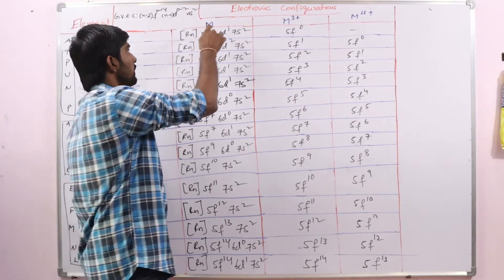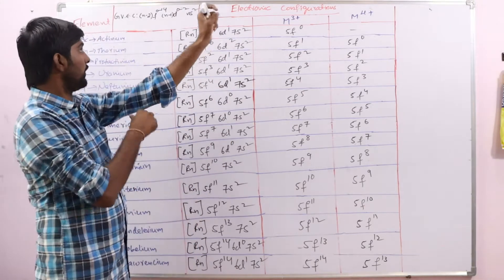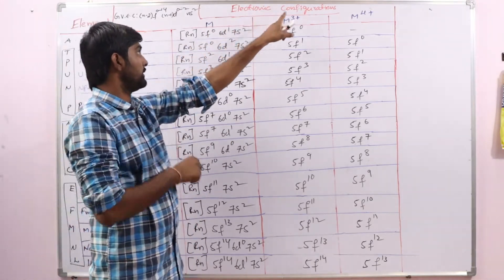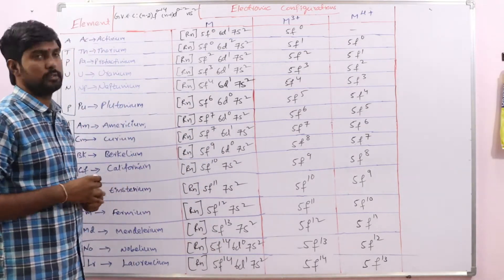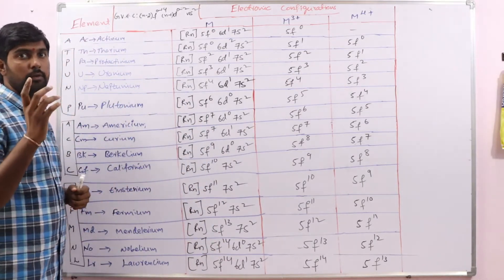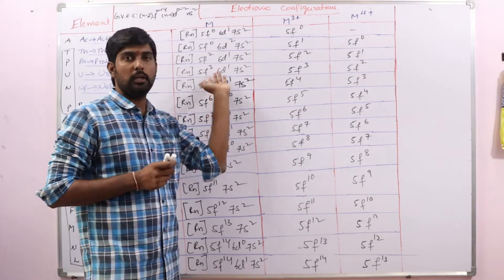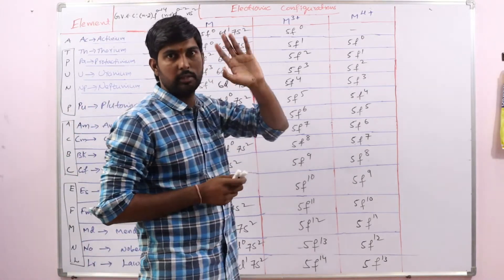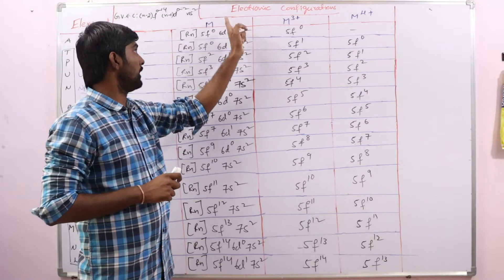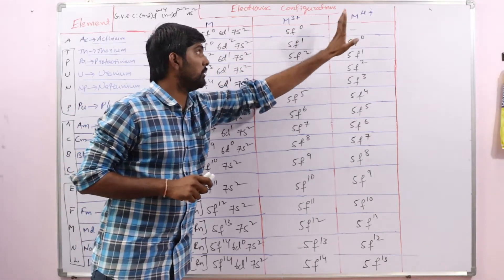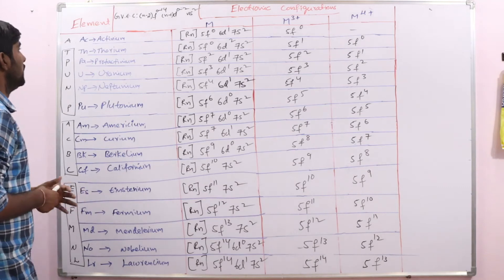So here in the neutral state — that is in the elemental form — and in the plus 3 oxidation state and in the plus 4 oxidation state we will discuss the configurations. In lanthanoids, plus 2 is also more stable, but here generally plus 2 is not stable, as we discussed in the oxidation states.